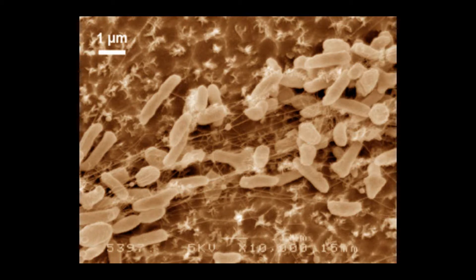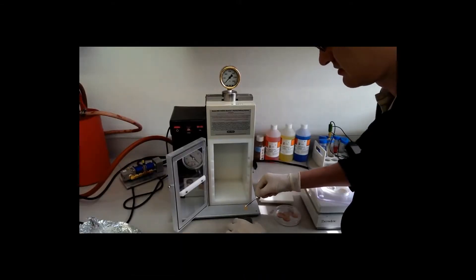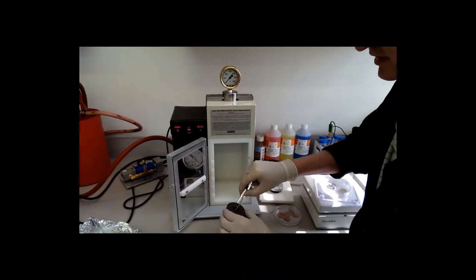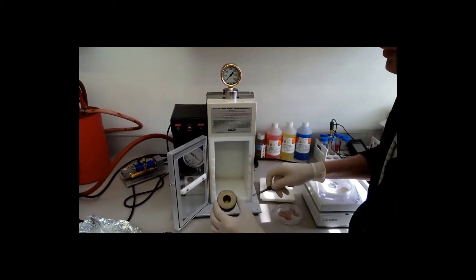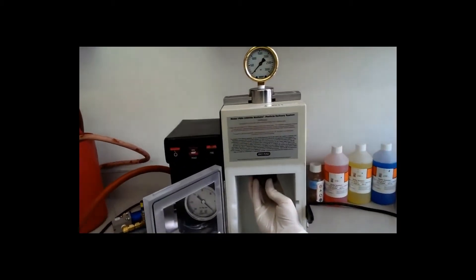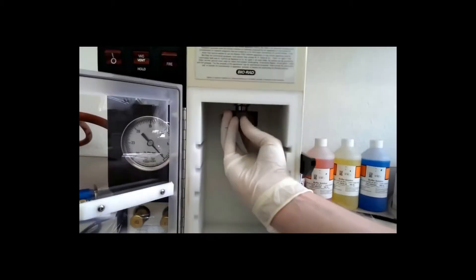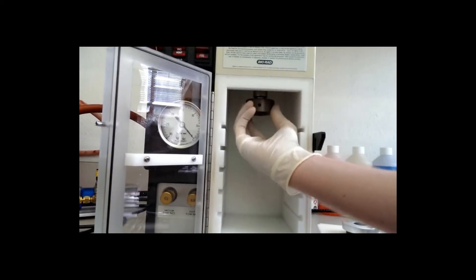Genes ISF6_4831 and ISF6_0224 were placed into a yeast artificial chromosome with ampicillin resistance before being inserted into the genome of a yeast cell to replicate it. After a substantial amount of genetic information was copied, it was extracted from the yeast, placed onto a gold particle, and bombarded into the genome of a reishi mushroom spore.